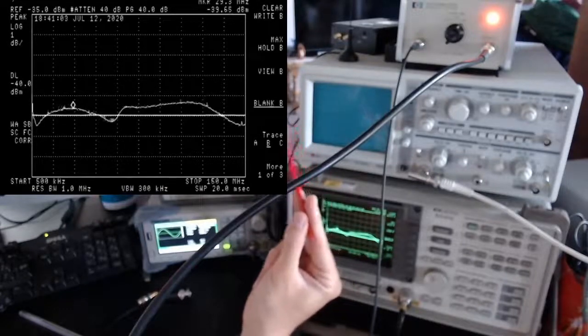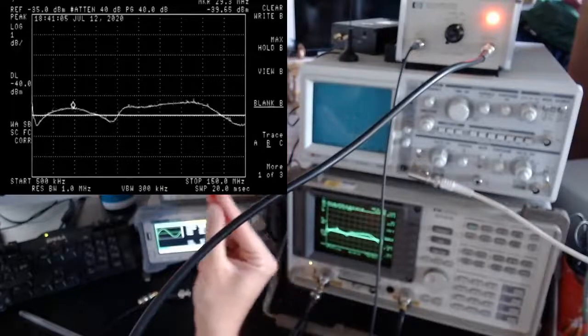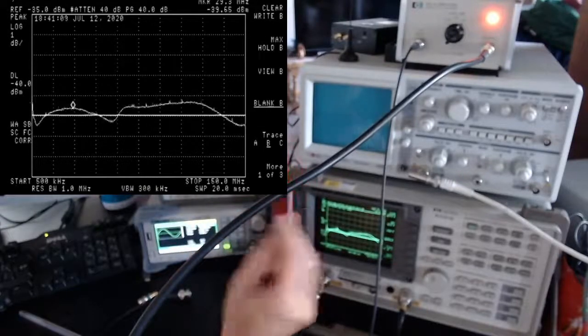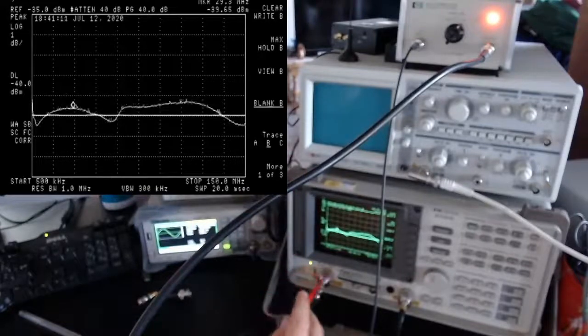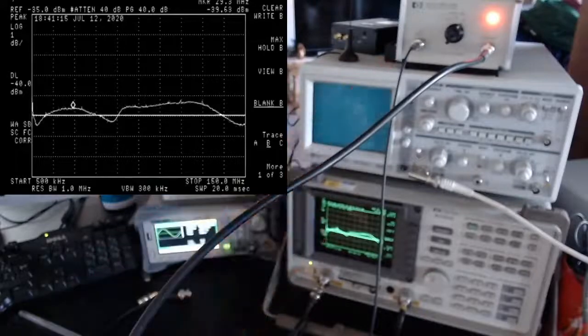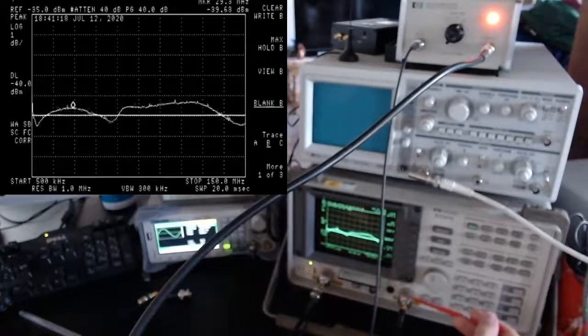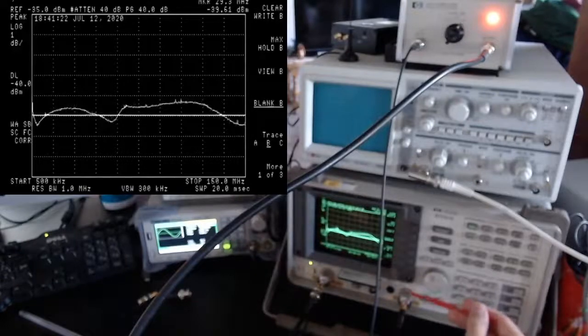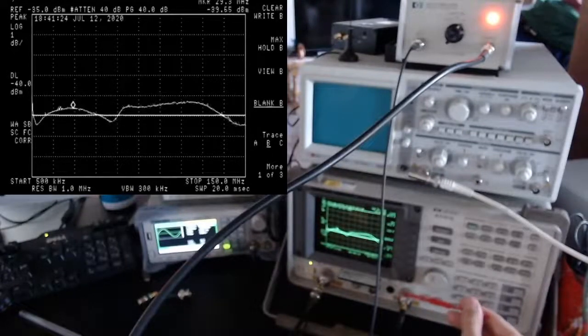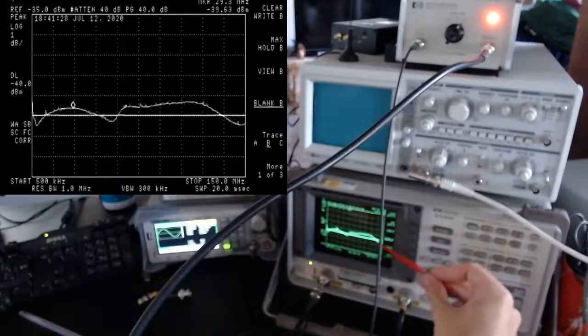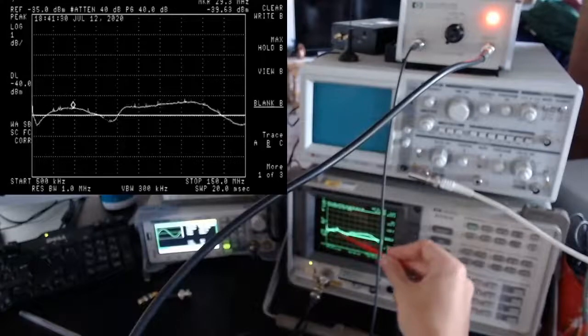So the input is this flat line. Imagine it being minus 40 dBm signal coming out from the tracking generator. It's being amplified and then going inside the spectrum analyzer. I have set already the spectrum analyzer to know that there is a 40 dB amplification going on. So here we see the result and it is pretty much close to the expected 40 dB of amplification.